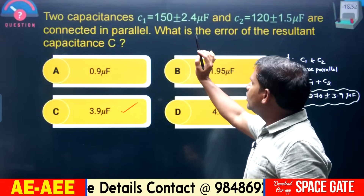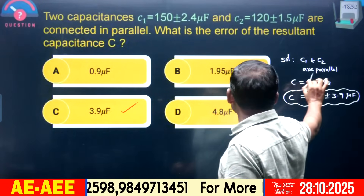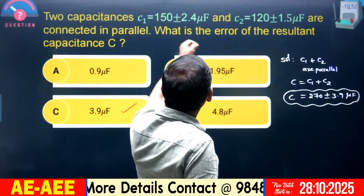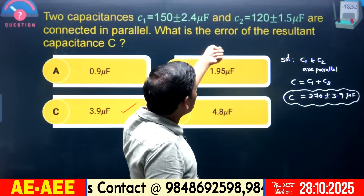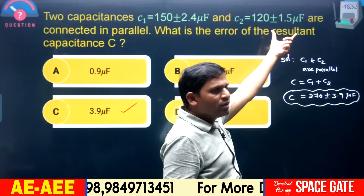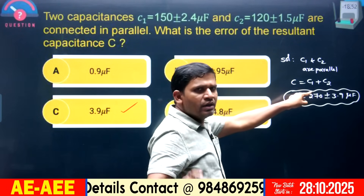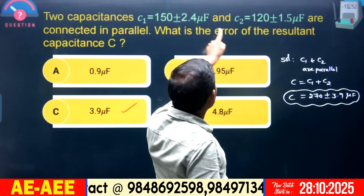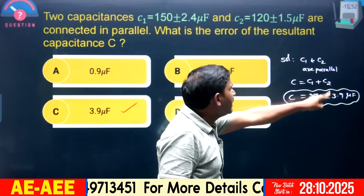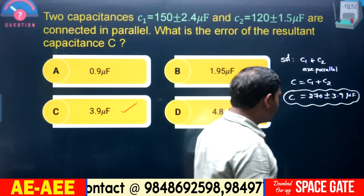To summarize: two capacitors in parallel — capacitances are added directly. The given errors are absolute, so take 150 ± 2.4 and 120 ± 1.5. Normal analysis: 150 + 120 = 270. In addition, absolute errors are added directly: 2.4 + 1.5 = 3.9. Error equals 3.9 microfarad. Option C is the right answer.